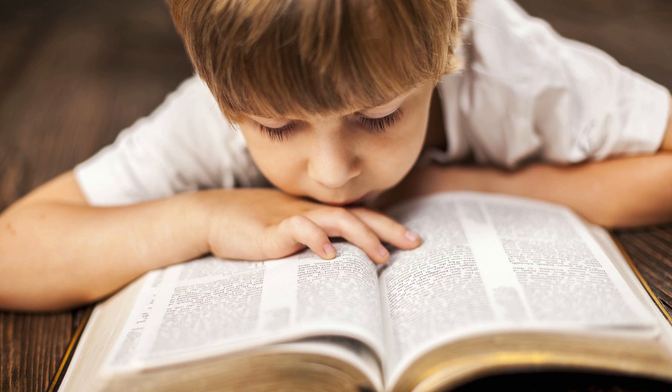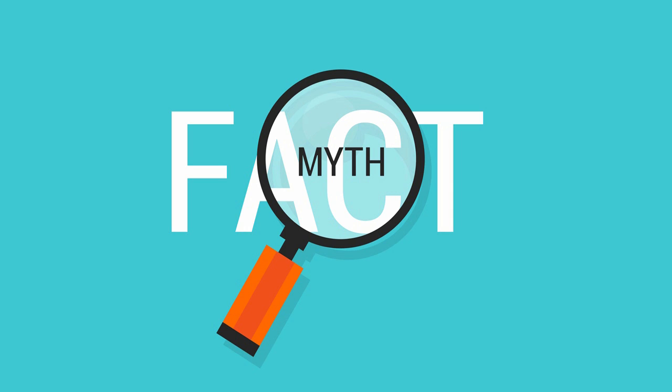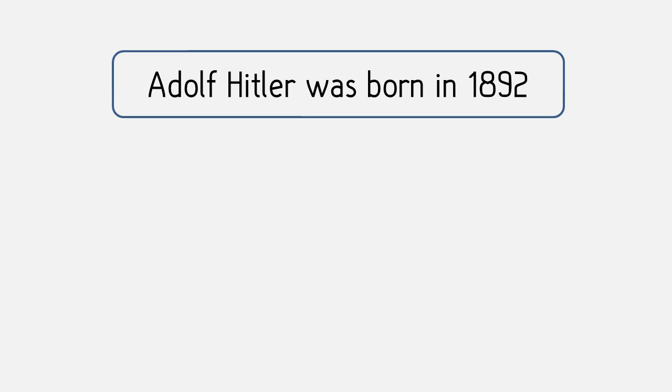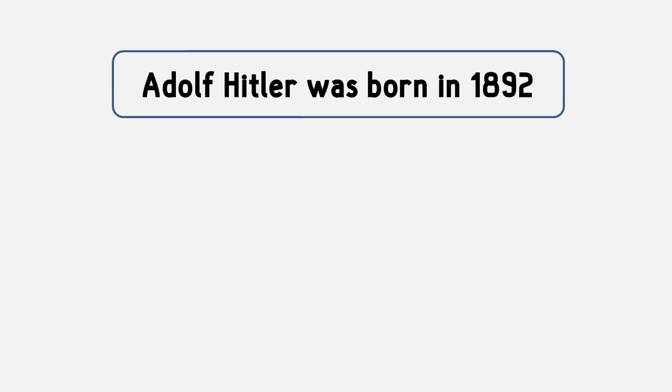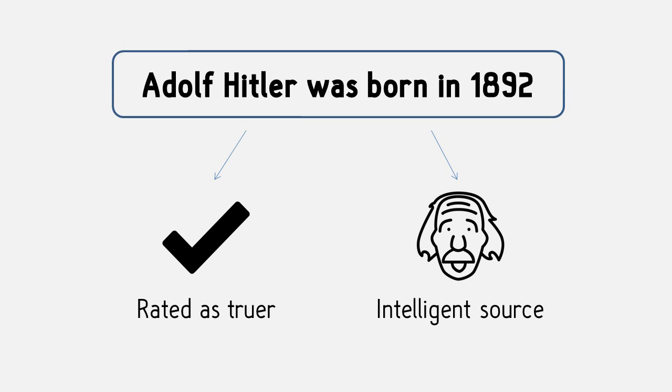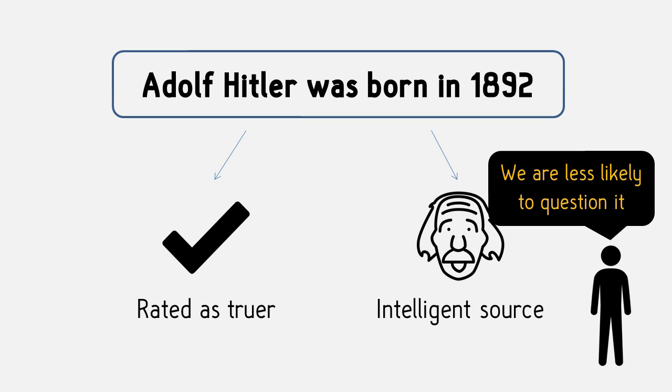Now, unfortunately, this effect can also be used to fool you. For example, if researchers present a statement like, Adolf Hitler was born in 1892, in a more readable font, participants will rate it as being truer and will believe it comes from a more expert source. This is because without that cognitive strain, we are less likely to question these types of statements.